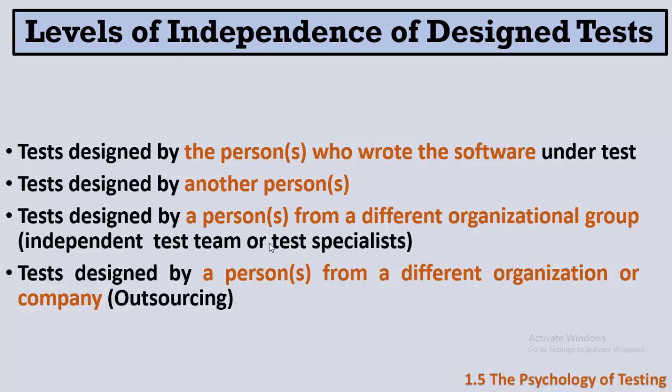In the third level, the development team reports to the development manager and the testing team reports to the test manager — this is a very high level of independence, but it requires a big company and cannot be used in a small startup of around 20 people. The last and highest level of independence is tests designed by a person from a different organization or company — this is outsourcing, where after finishing or during the project, another company tests it, or freelancers from around the world test it online.